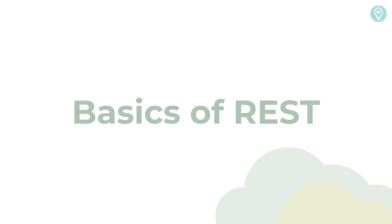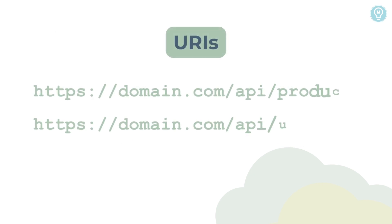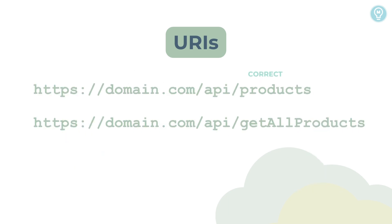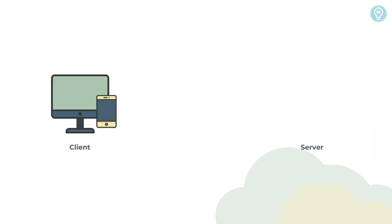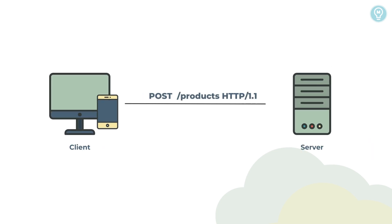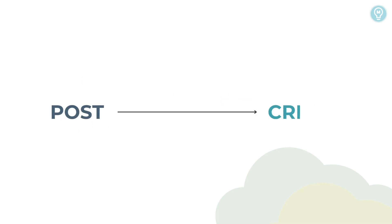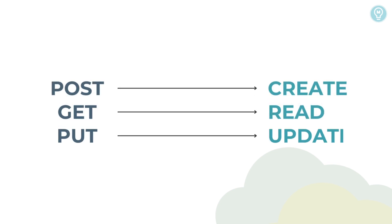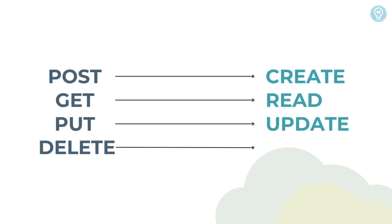Let's understand the basics of REST. REST APIs use URIs to address resources, and REST URIs should refer to a resource by noun and not by verb. An API to get all products should be 'products' and not 'get all products'. A client should interact with a resource by making a request to the endpoint over HTTP protocol. The URIs are preceded by an HTTP verb or method which tells the server what to do with the resource. The most used HTTP verbs are POST to create a new resource, GET to read a resource, PUT to update a resource, and DELETE to delete a resource.